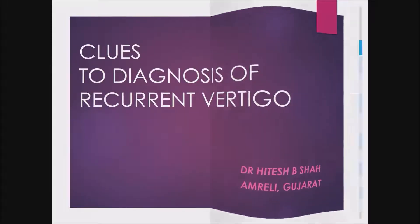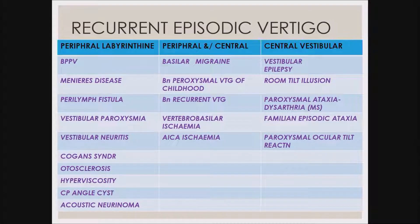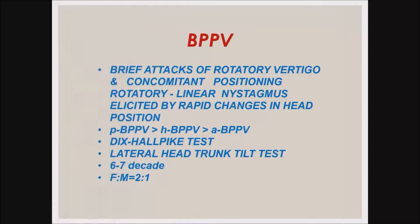This is the theoretical classification of recurrent episodic vertigo. In peripheral causes we have BPPV, Meniere's, Perilymph Fistula, Vestibular Paroxysmia, Vestibular Neuritis, Cogan's Syndrome, Otosclerosis, Hyperviscosity, CP angle cysts and acoustic neuroma. In central and peripheral causes: basilar migraine, benign paroxysmal vertigo of childhood, benign recurrent vertigo, VBI, and AICA ischemia. In purely central causes: vestibular epilepsy, room tilt illusion, paroxysmal dysarthria, familial episodic ataxia, and paroxysmal ocular tilt reaction.